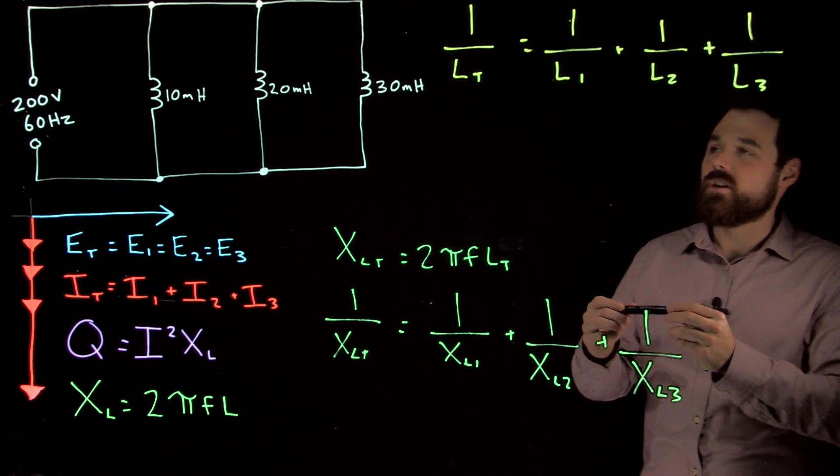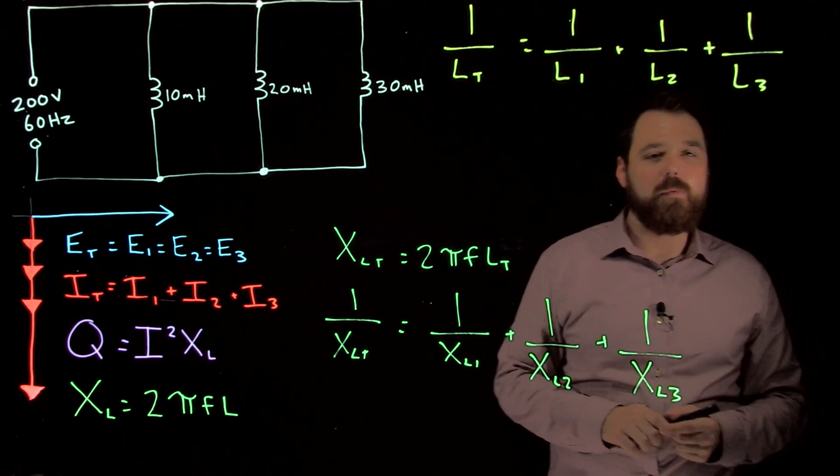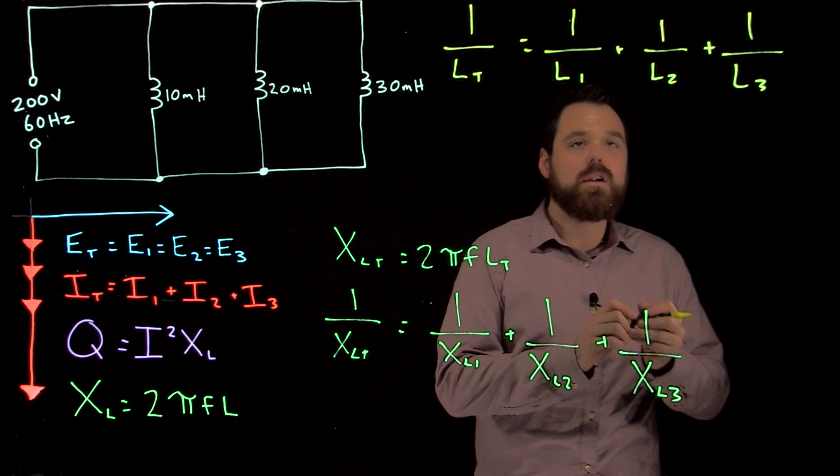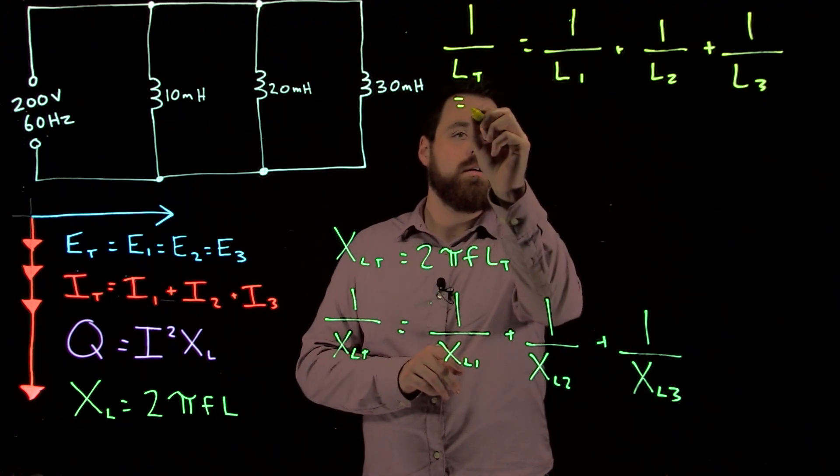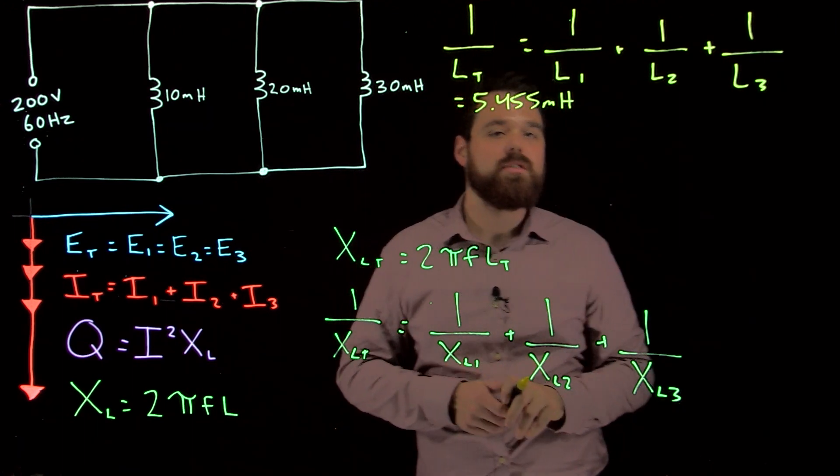When we're looking at this circuit here, we're going to get a couple different numbers from the circuit. When we do our total inductance, we should end up with 5.455 millihenries.